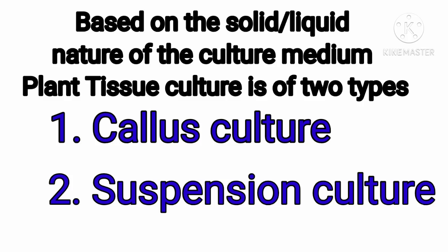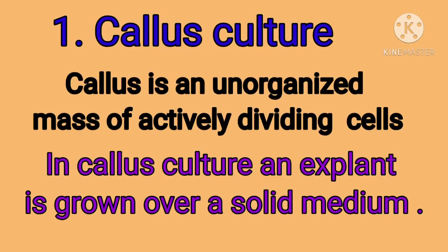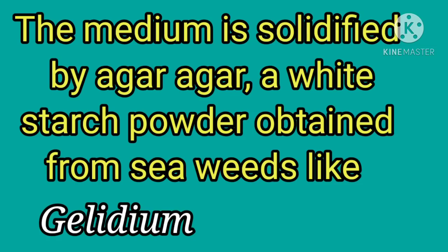Based on the solid or liquid nature of the culturing medium, plant tissue culture is of two types: callous culture and suspension culture. Callous is an unorganized mass of actively dividing cells. In callous culture, the explant is grown over a solid medium, solidified by adding agar — a starch-like powder derived from seaweed.